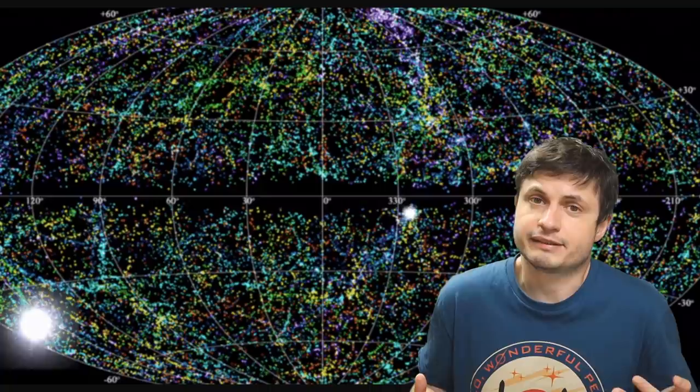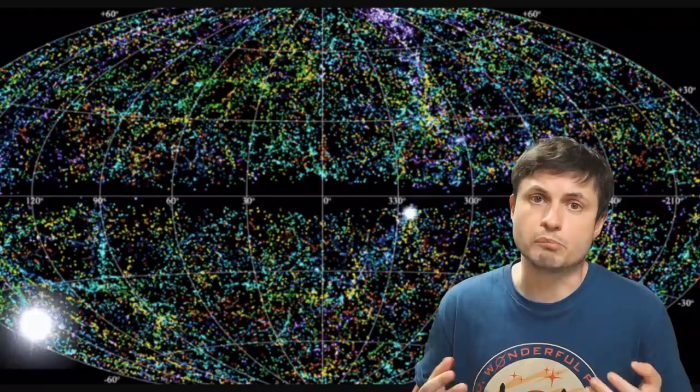Because there are so many of them, it means that something relatively common must be creating them. Something that seems to be present in most likely most galaxies out there and was present for billions of years. But something that's not super common, mostly because only one single FRB has been confirmed in our own galaxy, the Milky Way.